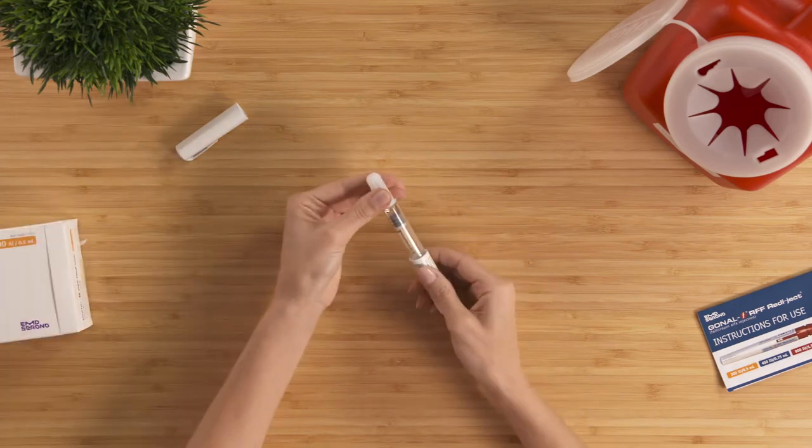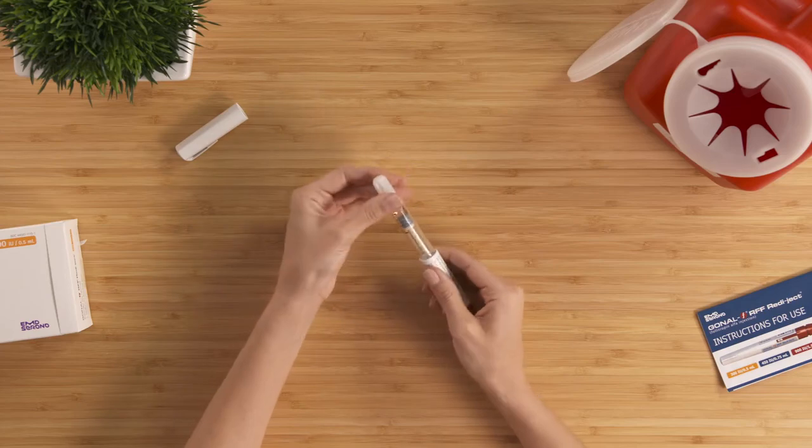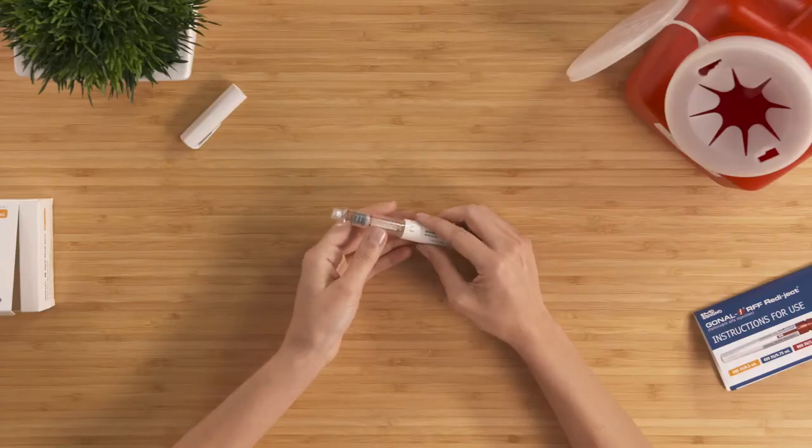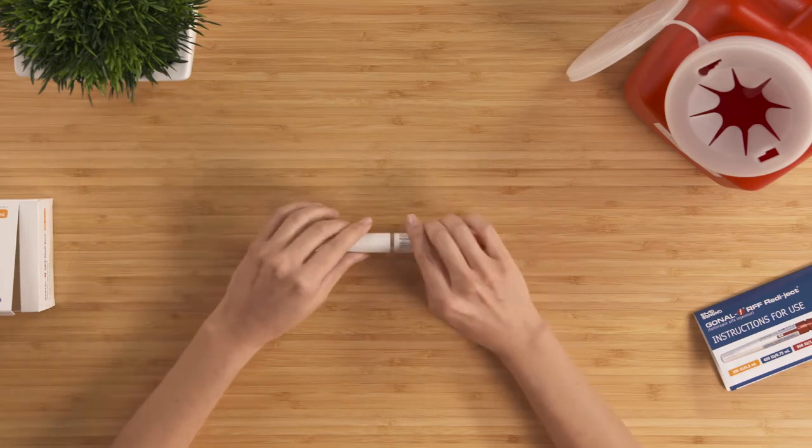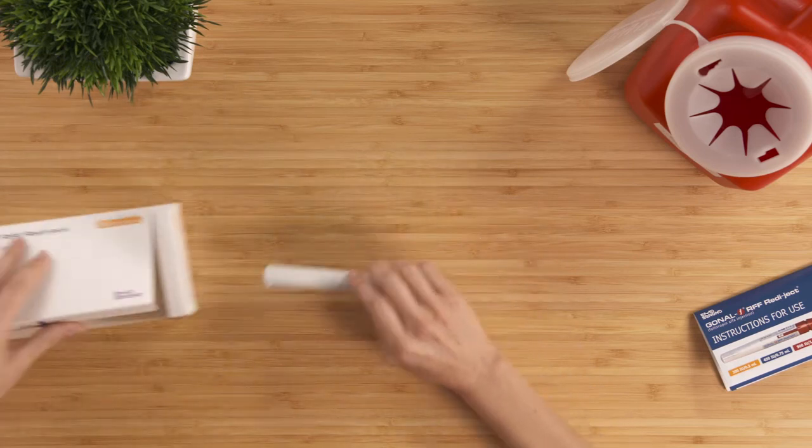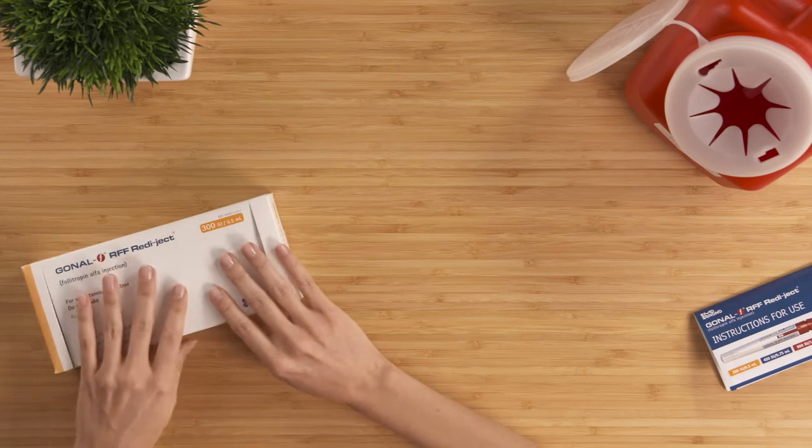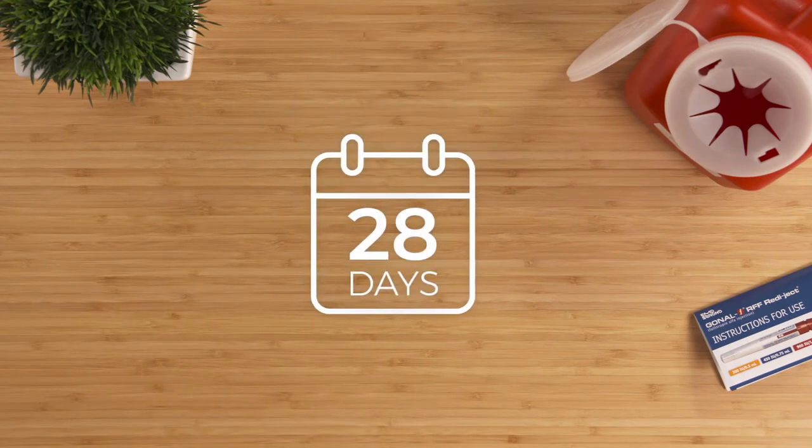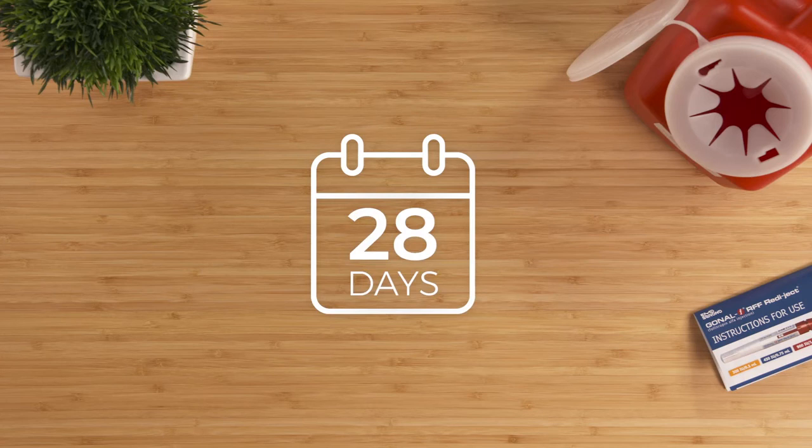Twist off the capped needle and throw it away in an approved sharps disposal container. Like this one, here. After removing the needle, recap the pen. If you have medicine left in a pen after injecting, store it in the refrigerator or at room temperature for up to 28 days. If the pen is empty after your injection, throw it away in the sharps container.